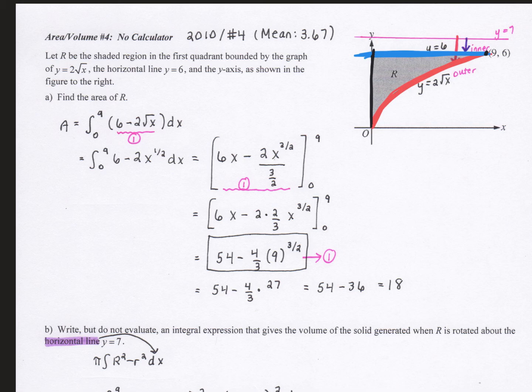In part A, I'm asked to find the area of region R. I can see I have a consistent upper and lower bound throughout that whole region, all the way from a low x of 0 to a high x of 9. So my limits are going to go from 0 to 9, and then upper minus lower.